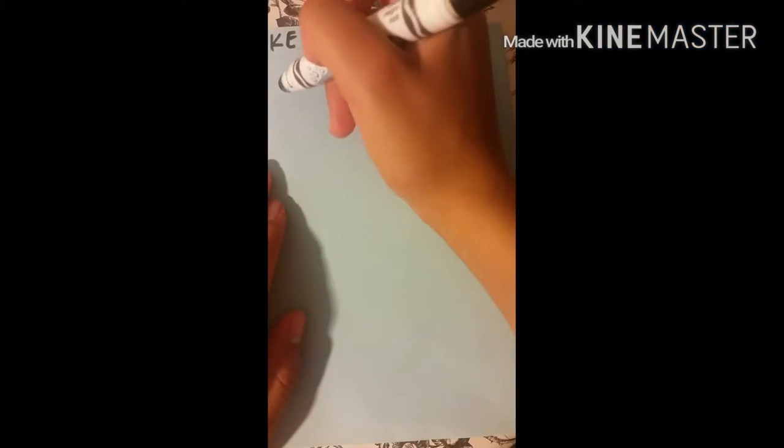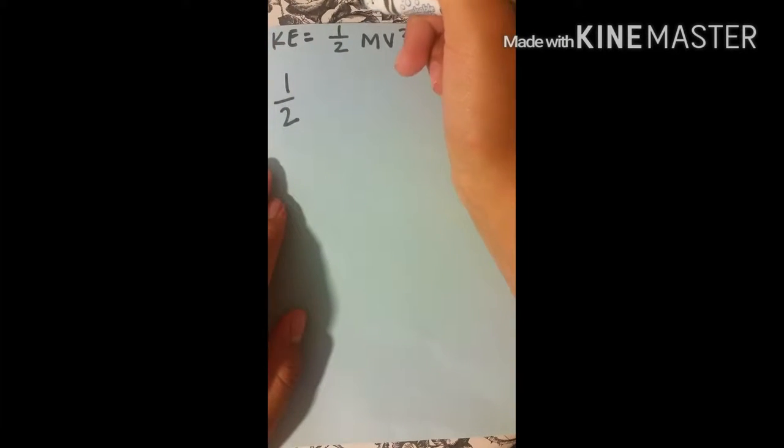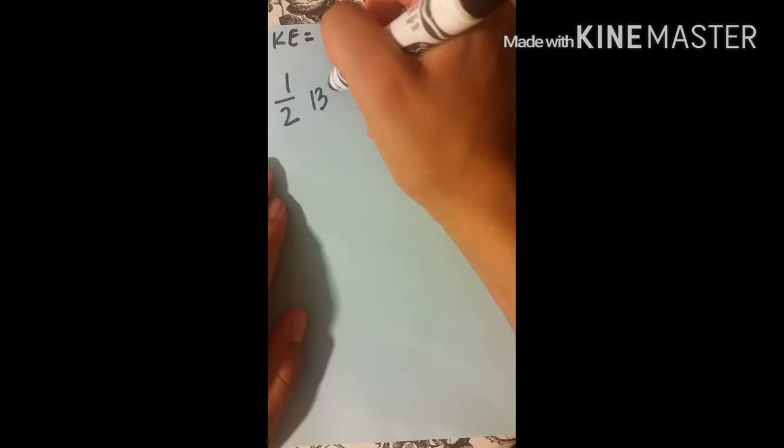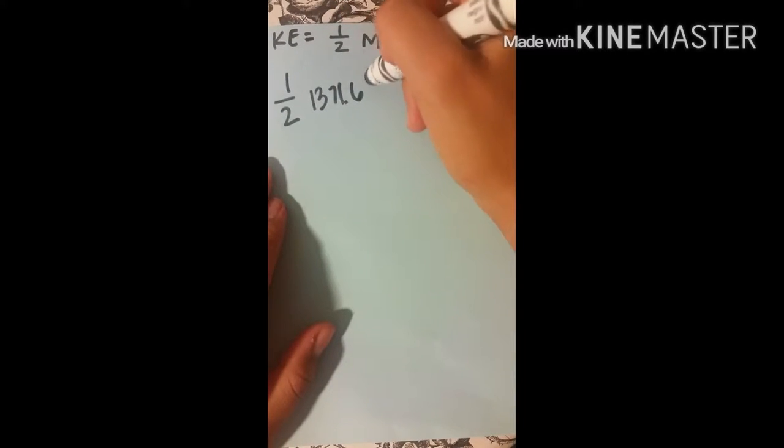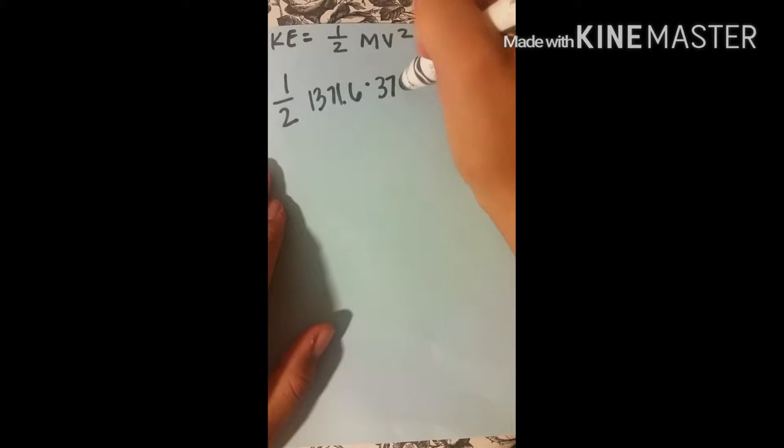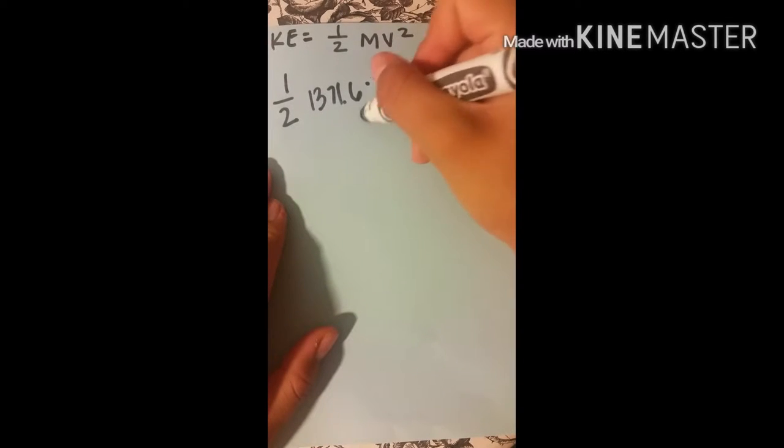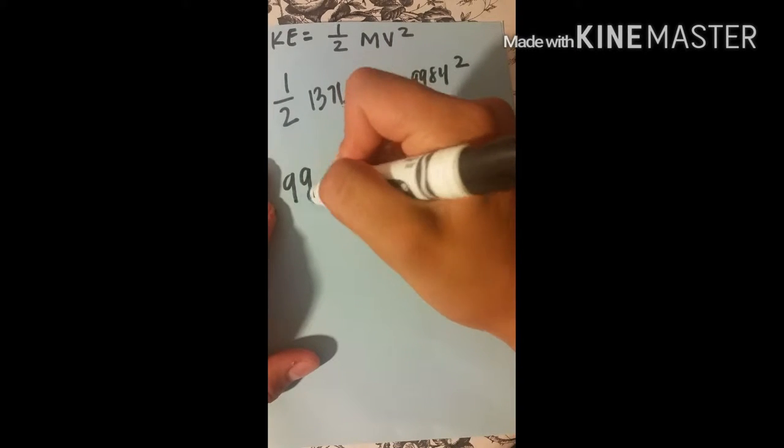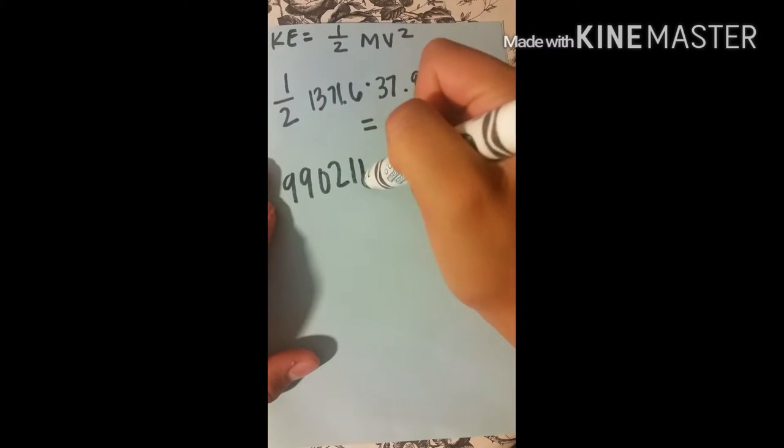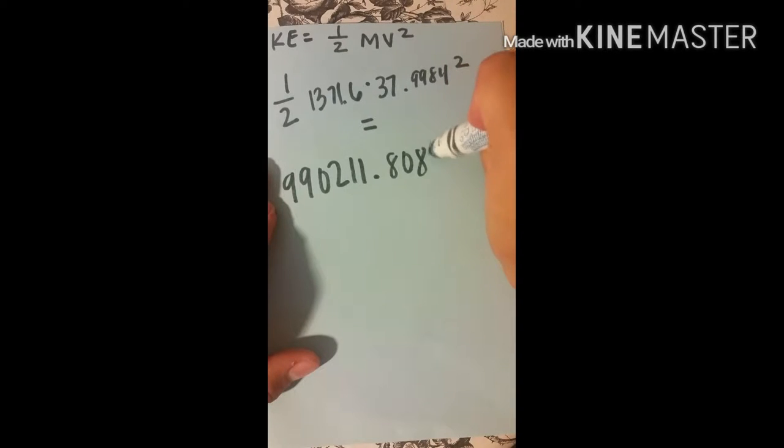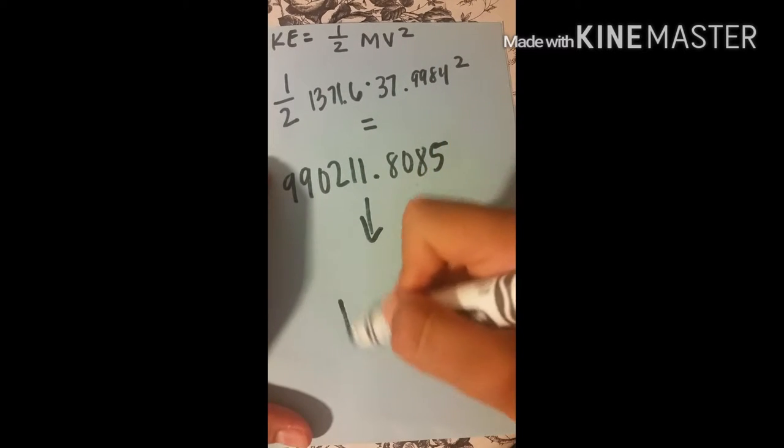And before we begin solving problems, I just wanted to mention that every mathematical expression here... To solve kinetic energy, we are going to use one half and the length of our coaster is 1371.6 meters times our velocity which is 37.9984 square meters. And that is going to give us 9902.118085. And this is our kinetic energy.